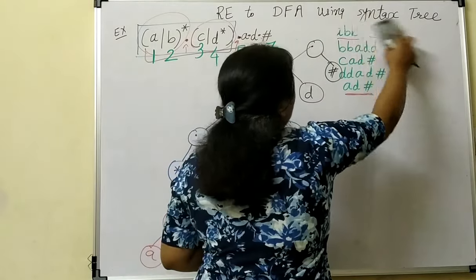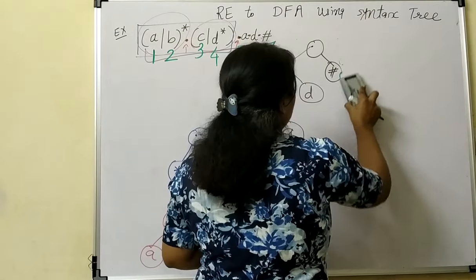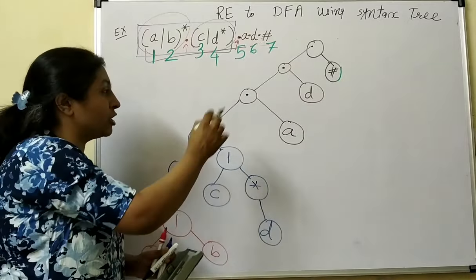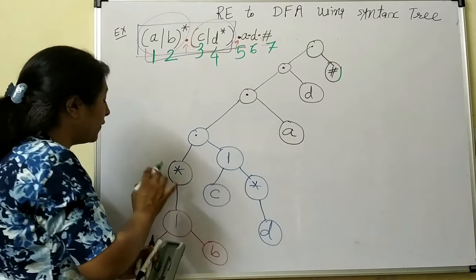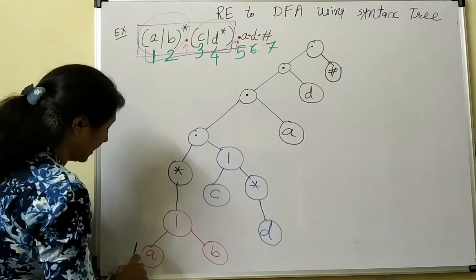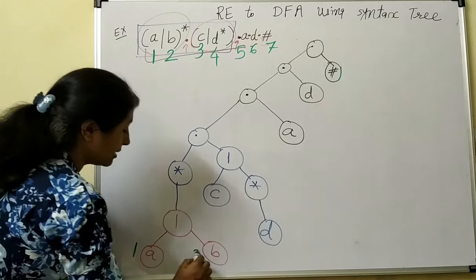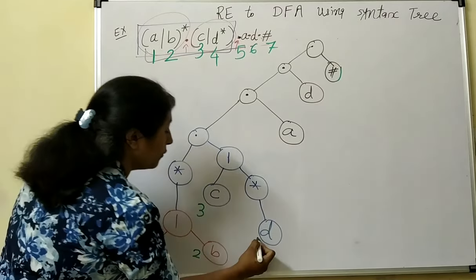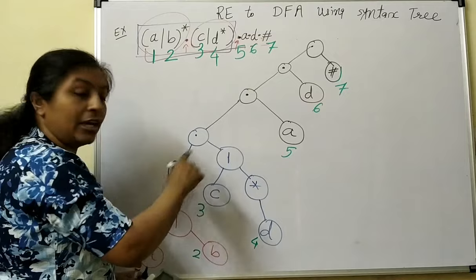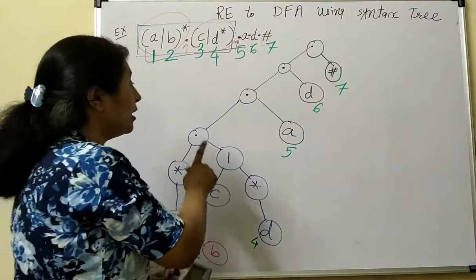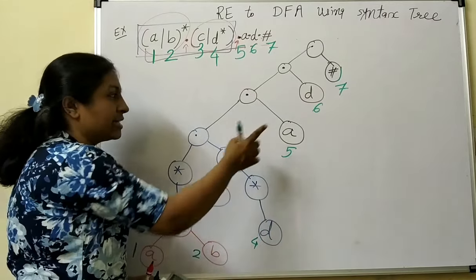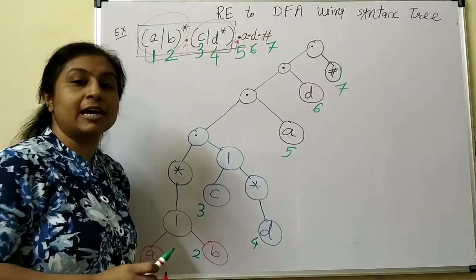The second step is to find the first position of each and every node. The first position of any node having a symbol is always the symbol itself: symbol 1, 2, 3, 4, 5, 6, and 7. All leaf nodes contain the symbols and all non-leaf nodes contain the operators — that is the structure of a syntax tree.